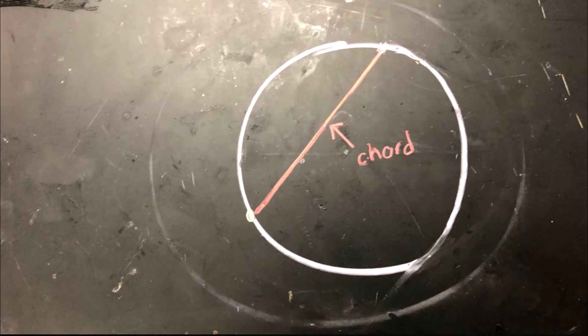A chord is a line segment that stretches from one point on the circle to another but doesn't have to cross through the origin. Therefore, a diameter is a chord, but a chord does not have to be a diameter.